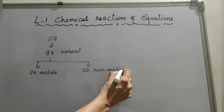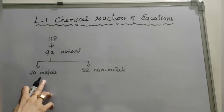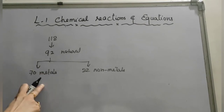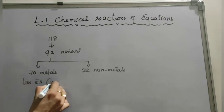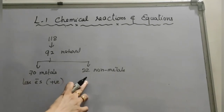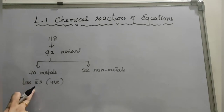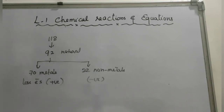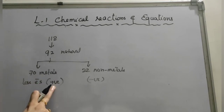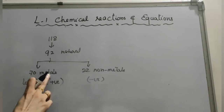Out of these 92, approximately 70 are metals and approximately 22 are non-metals. Metals are characterized by the ability to lose electrons in order to build positive ions — they lose electrons and build positive ions. Whereas non-metals are electron acceptors, they accept electrons and form negative ions.